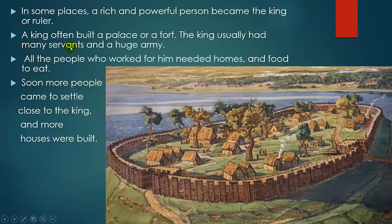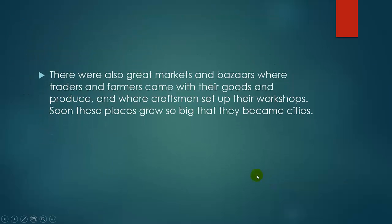The king had many servants and a huge army. All the people who worked for him needed homes. Soon more people came to settle close to the king, and more houses were built. There were also great markets and bazaars where traders and farmers came with their goods and produce, and craftsmen set up their workshops. Soon these places grew so big that they became cities.